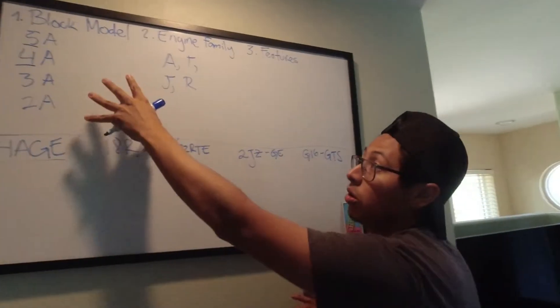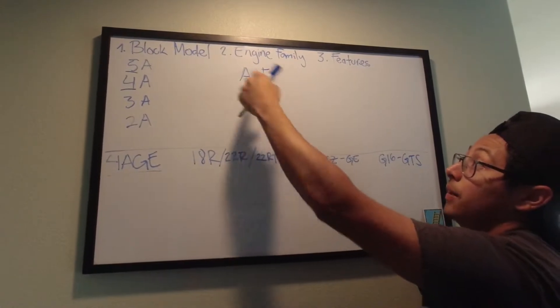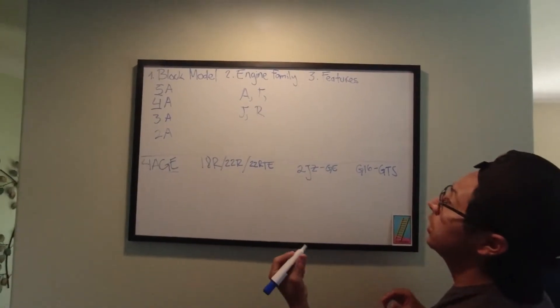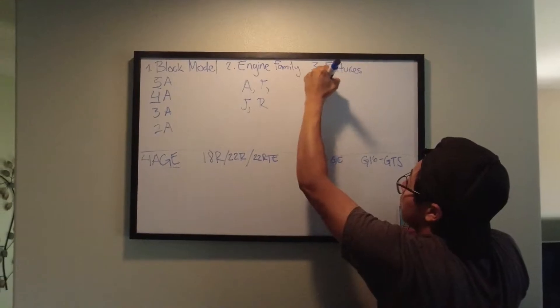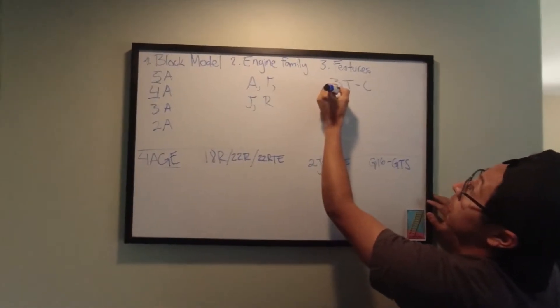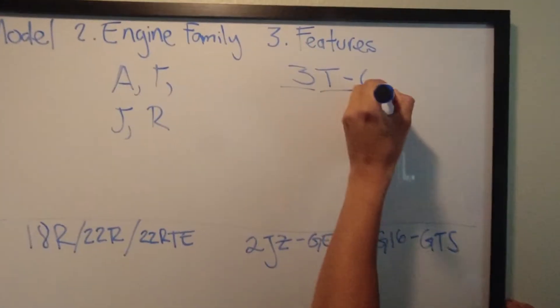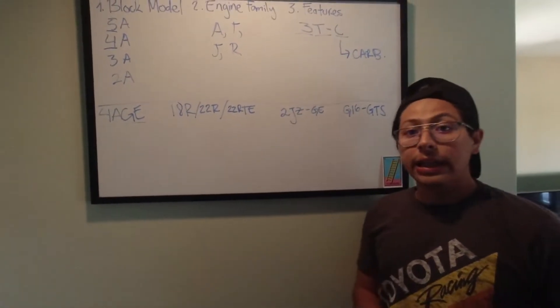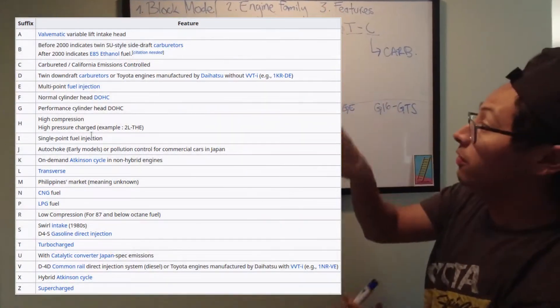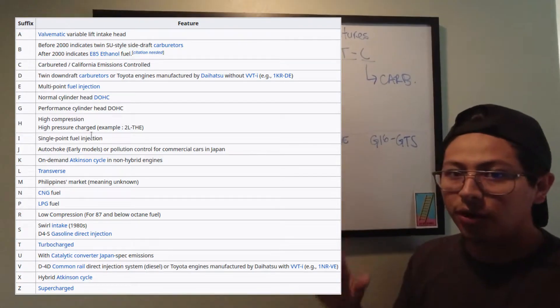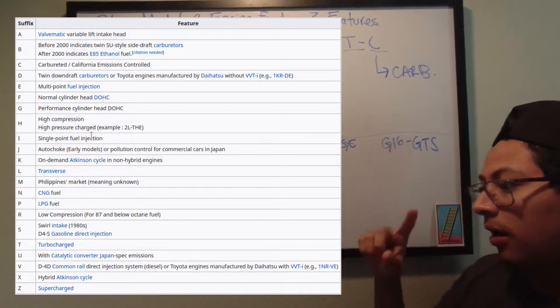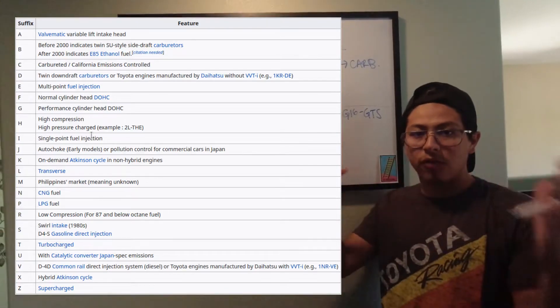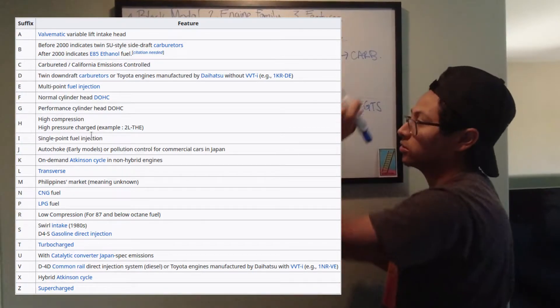The third part is going to be the features. After you know what block model or revision and the engine family, the rest of the characters are going to tell you what's special about that engine. For example, if you have an engine that is a 3TC, you have your block model, your family, and then this is the feature. In this particular case, C will mean carbureted. We're going to put a list right up here in the screen so that you can check out what each of the letters means for each feature. There's a lot of them because it can mean turbo, carbureted, dual port injection. Is it a dual overhead cam? Is it a sport dual overhead cam? So, there's so many things about the engine that they place with these letters. So, there's going to be a list right here.